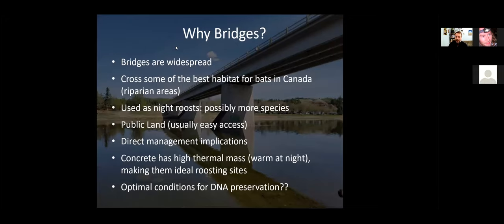Our project this year is focusing largely on bridges. A major emphasis was this Bats and Bridges project. Bridges have a number of traits that make them ideal for bat surveys — they are widespread and importantly they cross some of the best habitats for bats: riparian areas. In grassland regions, the vast majority of bat activity is highly concentrated near rivers, so the fact that bridges cross rivers is a very useful property. We also know bridges are used as night roosts, as plenty of studies in the United States and elsewhere have shown.